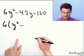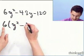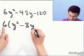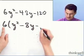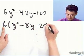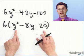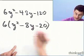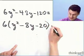If I pull out a 6 from here, I think I'm left with just y². And if I pull out a 6 from here, I think I'm left with just an 8. And if I pull out a 6 from here, I think I'm just left with 20. Okay, now we're talking my language, because this is something I can actually deal with. So let's see what this equals.